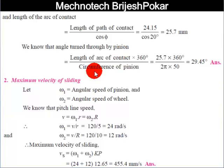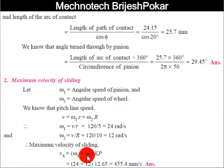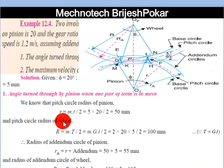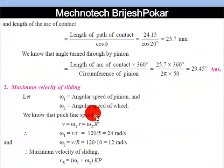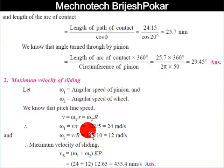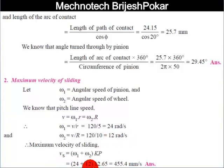For the maximum velocity of sliding: ω₁ is the angular speed of the pinion and ω₂ is the angular speed of the wheel. The maximum sliding velocity V_s = (ω₁ + ω₂) × KP. The pitch line velocity v = 1.2 m/s = 1200 mm/s. ω₁ = v / r = 1200 / 50 = 24 rad/s, and ω₂ = 1200 / 100 = 12 rad/s. Therefore V_s = (24 + 12) × 12.65 = 455.4 mm/s.